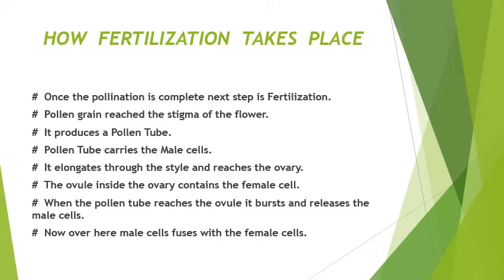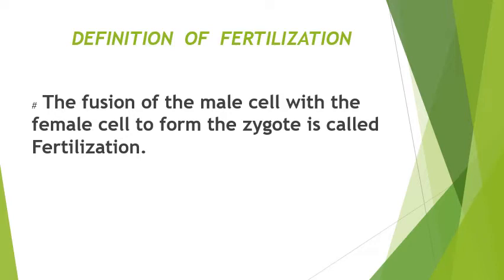Here is a step-by-step recap: once pollination is complete, fertilization begins. The pollen grain reaches the stigma, produces a pollen tube, which carries the male cells, elongates through the style, and reaches the ovary. The pollen tube bursts open, releases the male cell, and the male cell fuses with the female cell to form the zygote. The fusion of the male cell with the female cell to form the zygote is called fertilization.